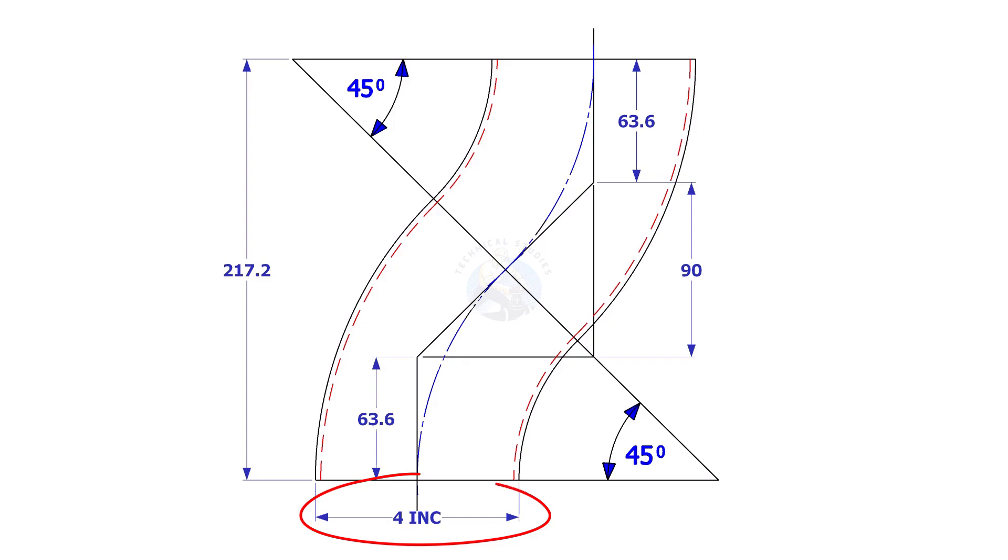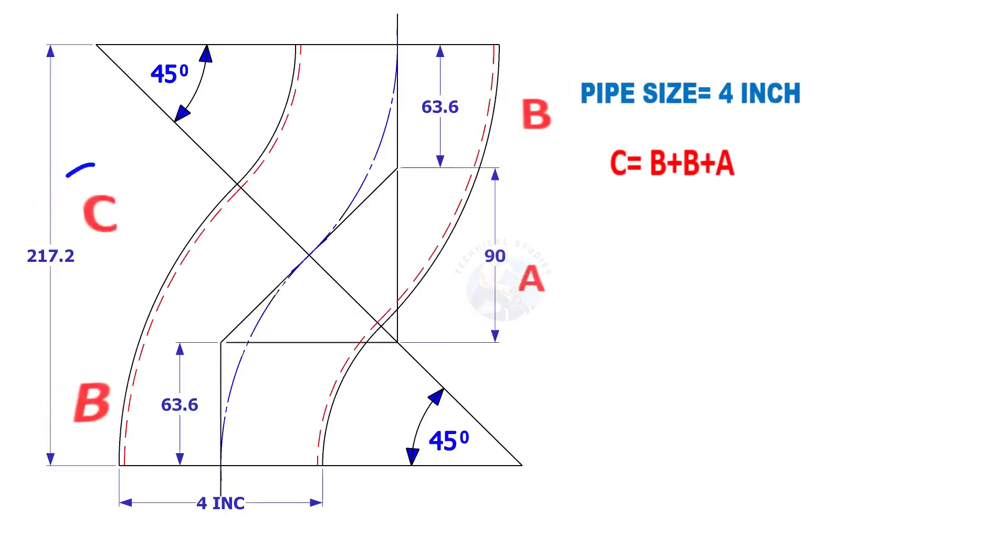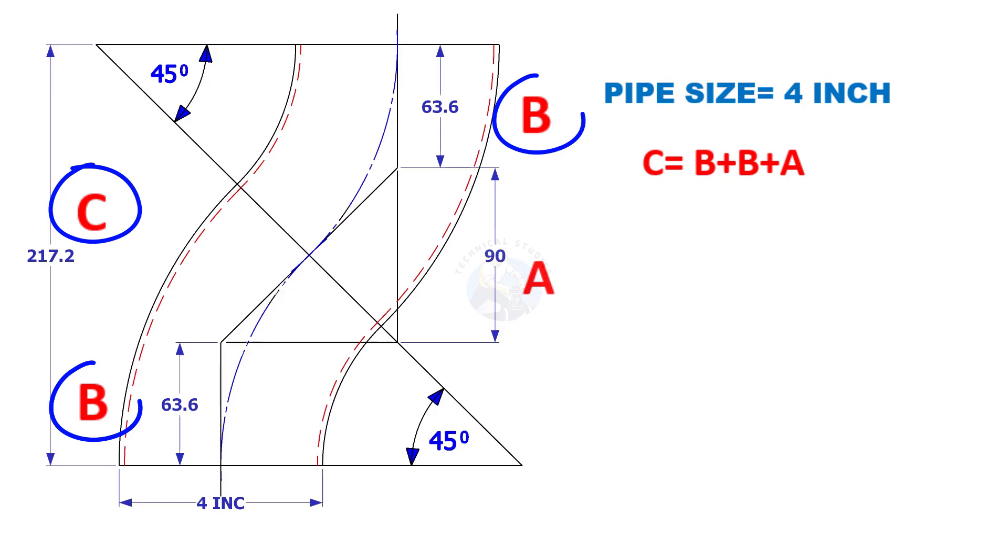Assume that the elbow diameter is four inches. We have to calculate the elbow center of a forty-five degree elbow. The height C is equal to B plus B plus A.